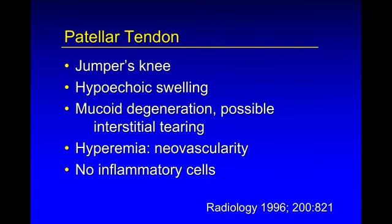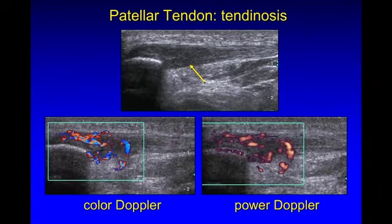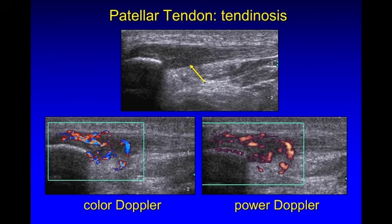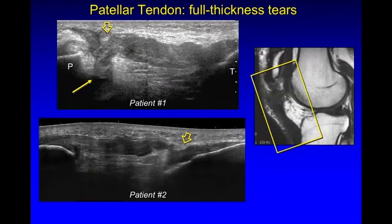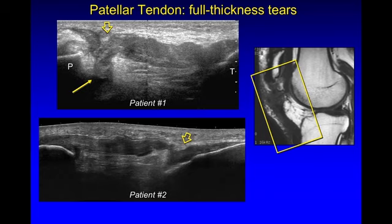Moving on to the patellar tendon, looking at what's called jumper's knee — tendinosis and possible interstitial tearing of the patellar tendon, usually proximal, typically central and deep. Neovascularity is often present, again representing hyperemia and not inflammation, and this corresponds to patient symptoms. Here's the normal patellar tendon, fibrillar and echogenic, and here we see hypoechoic thickening and hyperemia, consistent with tendinosis. Here are two companion cases showing full thickness tears of the patellar tendon — a defect at the proximal part and a defect of the distal tendon — with complete discontinuity and retraction indicating full thickness tear.